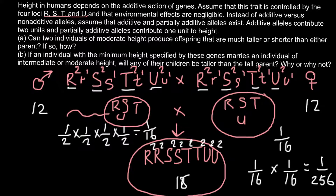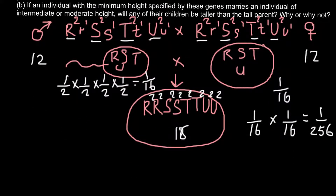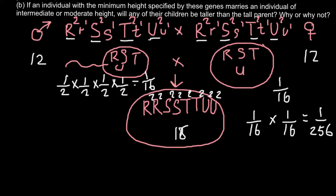Now we can move to Question B. If an individual with the minimum height specified by these genes marries an individual of intermediate or moderate height, will any of the children be taller than the tall parent? Why or why not? We can solve this problem by writing down the genotypes. The genotype of the short parent — let it be the mother — would be small r, small r, small s, small s, small t, small t, and small u, small u.